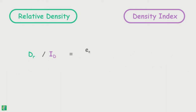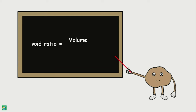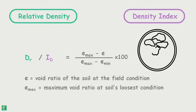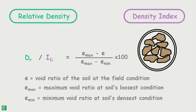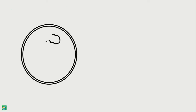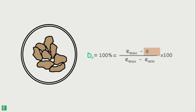Mathematically, it is defined as Emax minus E divided by Emax minus Emin, multiplied by 100. Here, E is the void ratio of the soil at the field conditions — defined as volume of voids divided by volume of solids. Emax is the maximum void ratio when all the soil particles occupy the loosest condition, meaning the soil has maximum volume of voids. Emin is the minimum void ratio when the soil is in its densest form. In the loosest state, relative density will be 0 because E equals Emax, and in the densest condition, it will be 100% as E equals Emin.